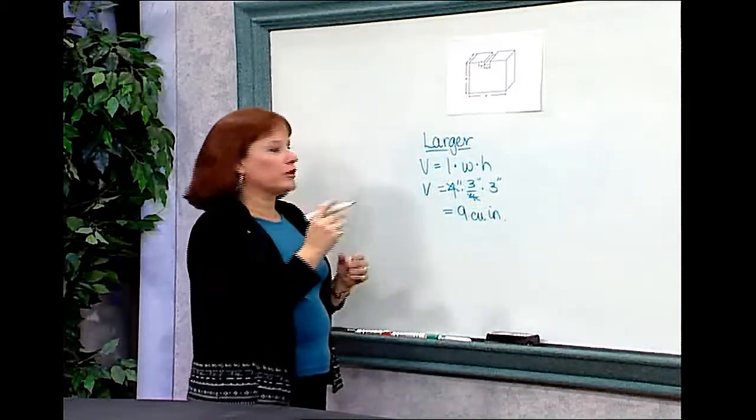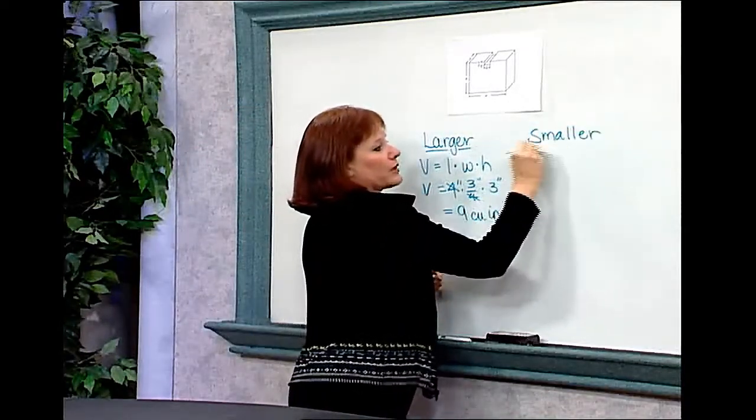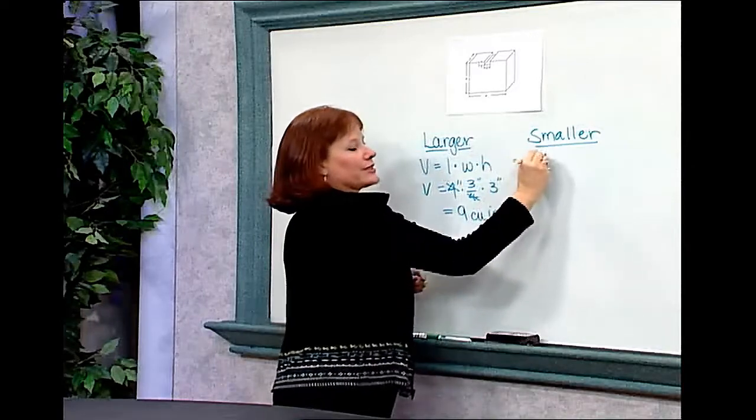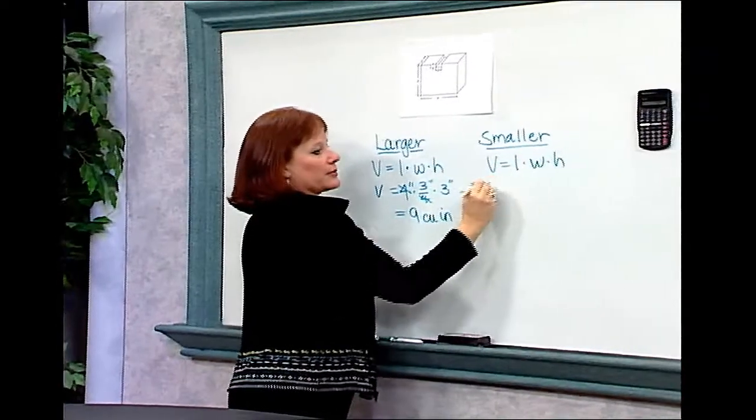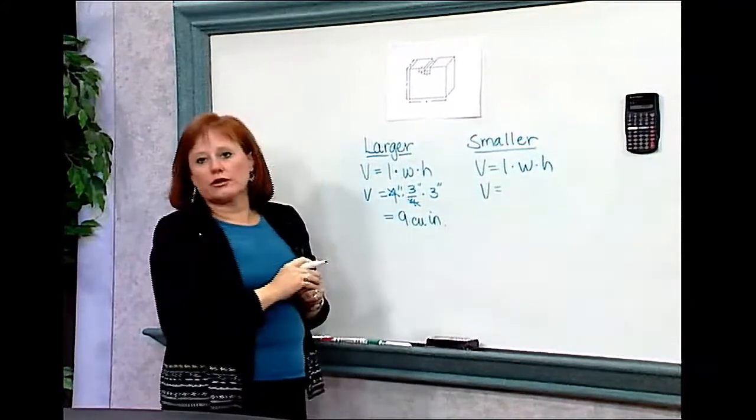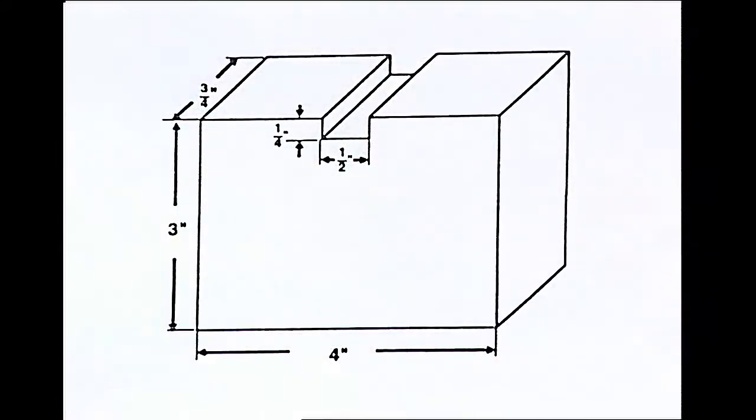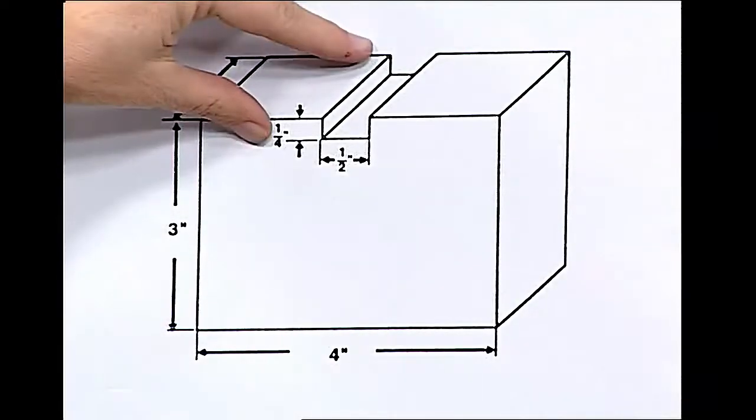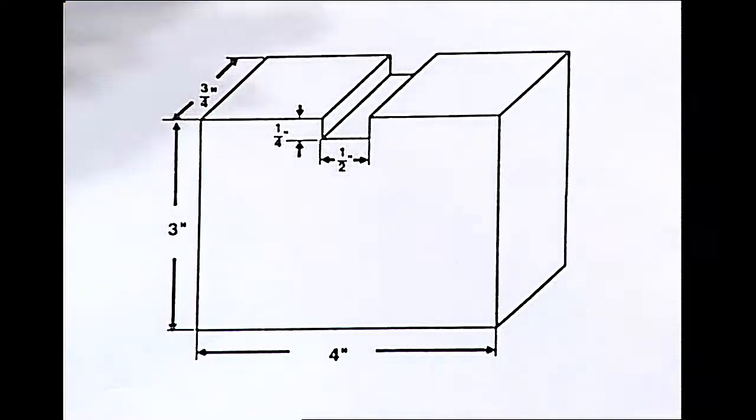Now if I look for the volume of the smaller prism, I'm going to use the same strategy. I know that it's a rectangular prism, so it's going to have the same volume formula. The volume will be the length times the width times the height. In this particular case, I'm going to look for the dimensions, and I'll have that the length is 1/2 of an inch. The width is again 3/4 of an inch, and the height is 1/4 of an inch.